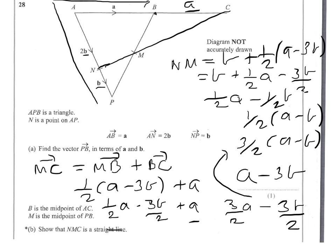You can in fact see the distance M to C then. I'll just underline that in red. So MC is 3 over 2 lots of a minus b, and NM is a half of a minus b. So you can see that MC is a multiple—MC is actually 3 times NM. They're going in the same direction, they have a common point, so they are on a straight line. All you really need to state is same direction, common point, straight line.